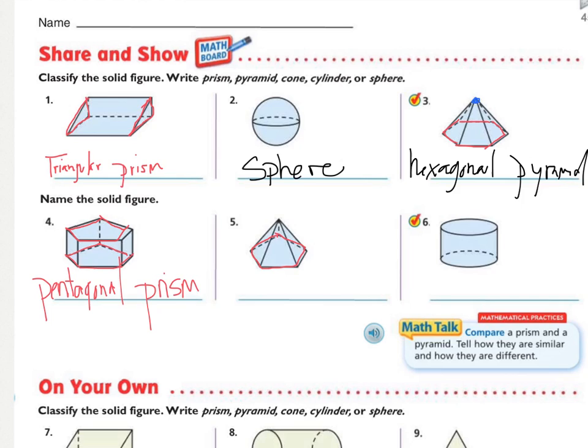Number five, there's one base and it has one point, so this is making it a pyramid. What type of pyramid? The base has one, two, three, four, five sides, so this one is a pentagonal pyramid.